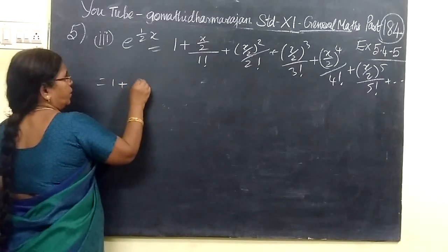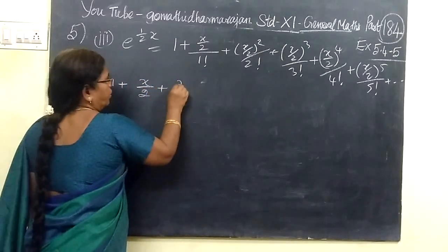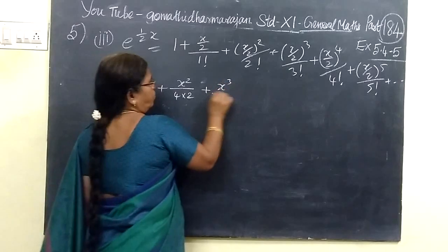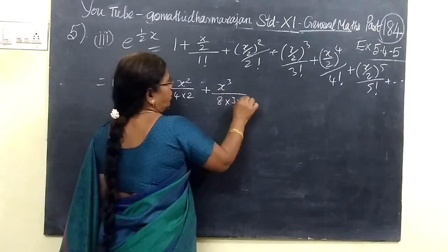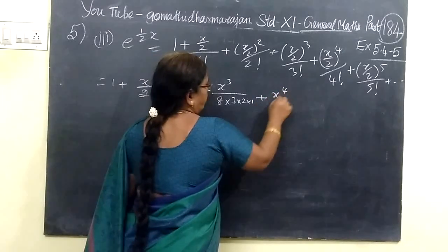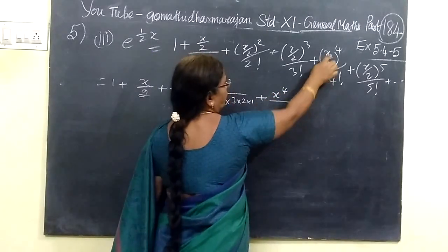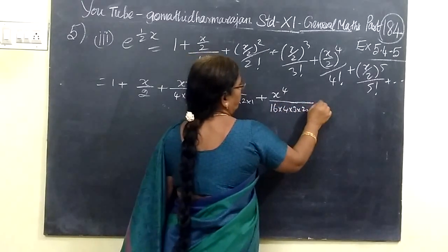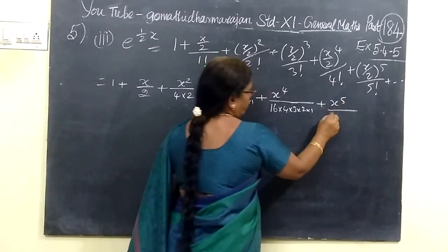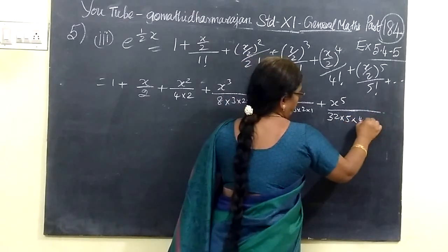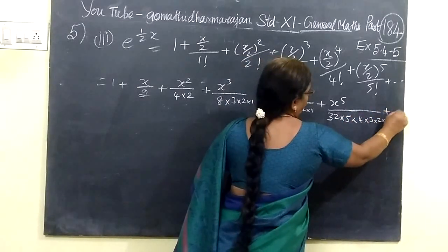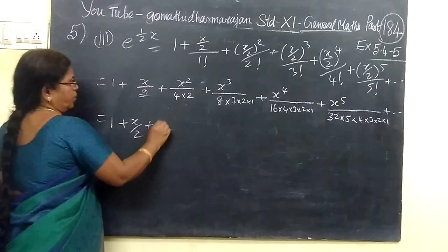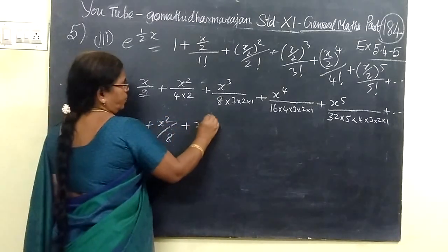So this is equal to 1 plus x by 2 by 1. Then x squared by 2 squared by factorial 2, which is 2 into 1. Then x to the fourth, then write 2 to the fourth, 16, into 4 into 3 into 2 into 1. Then x to the fifth, then 2 to the fifth is 32, then 5 into 4 into 3 into 2 into 1.